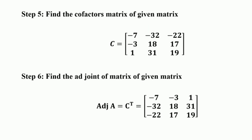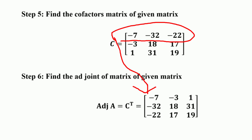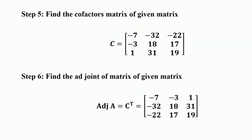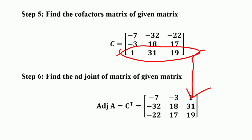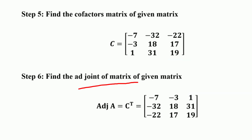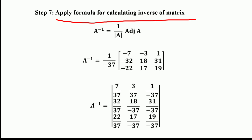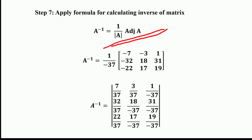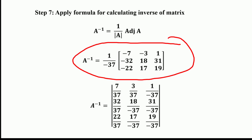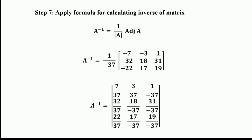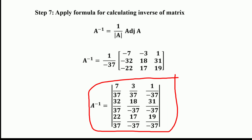After framing the cofactor matrix, we take its transpose by interchanging rows into columns and columns into rows. The first row becomes the first column, the second row becomes the second column, and the third row becomes the third column, giving the adjoint matrix. The inverse is then A⁻¹ = (1/det(A)) × adj(A) = (1/−37) × [−7, −3, 1; −32, 18, 31; −22, 17, 19]. Dividing each element of the adjoint by −37 gives the inverse of A.